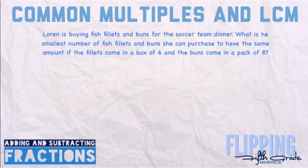Now let's look at this problem. Lauren is buying fish fillets and buns for the soccer team dinner. What is the smallest number of fish fillets and buns she can purchase to have the same amount, if the fillets come in a box of 6 and the buns come in a pack of 8?